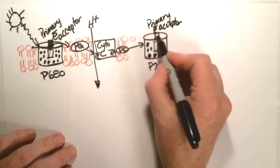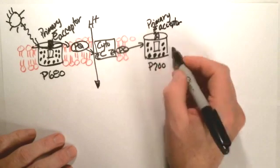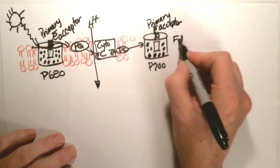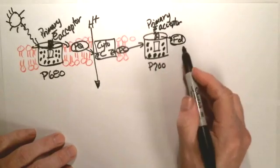And then, at that acceptor, where that electron goes, or comes into, it will send the molecule to, or send the electron to a molecule called FD. FD is another electron carrier.